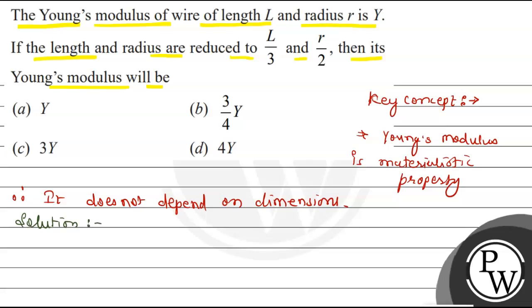The material is wire. In the first case, the length L1 is L. And in the second case, L2 is equal to L by 3.